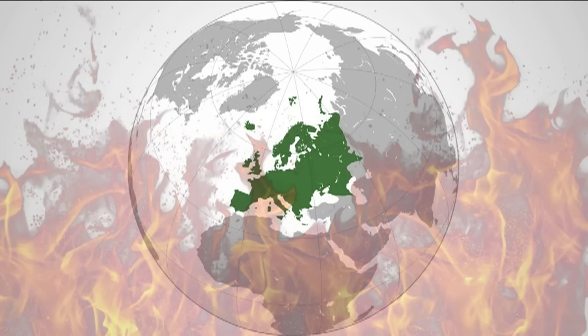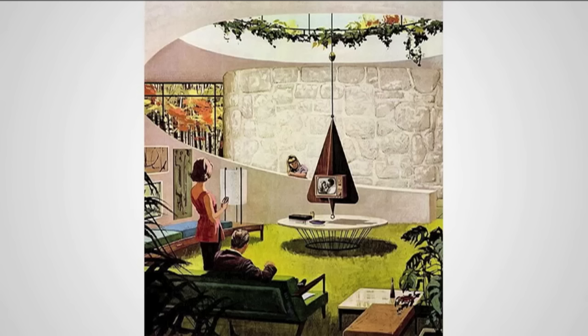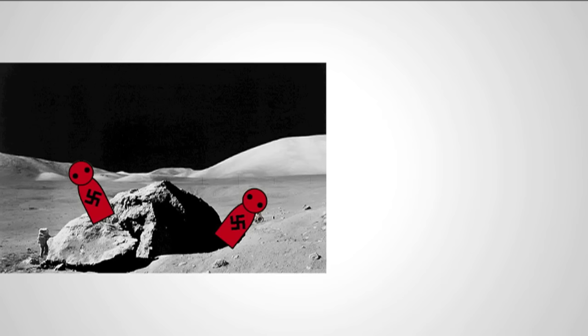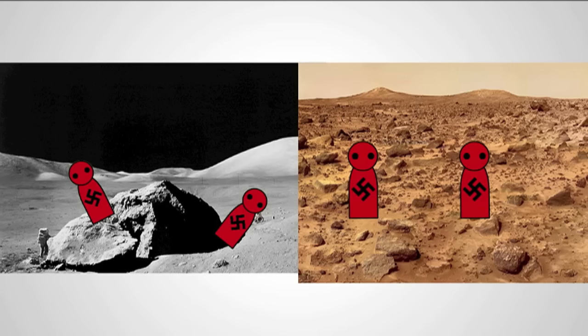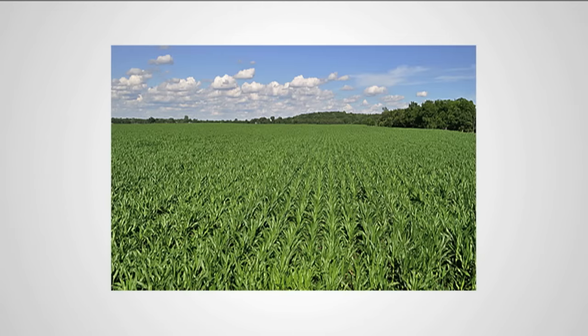In Europe, the story is much darker. In Dick's scenario, the Nazis shape the entire continent and landscape in their image, reshaping the world with scientific advancements and horrifying policies. Because of 20 years of German engineering, technology has progressed far beyond the 1960s of our timeline. The Germans have already colonized the moon and set up manned exploration of Mars. To gain more land, the Germans drain the Mediterranean Sea, turning it into fertile farmland.